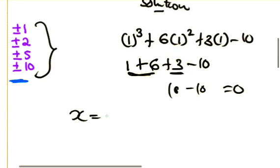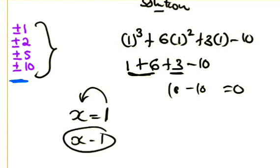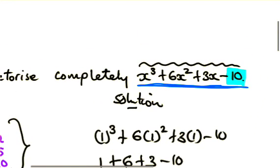Since x equals 1 makes the expression equal to zero, our factor is x minus 1. This is now our divisor.